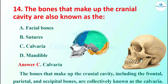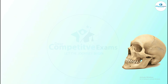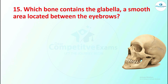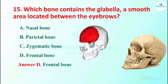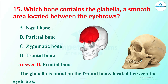Question 15: which bone contains the glabella, a smooth area located between the eyebrows? Options are nasal bone, parietal bone, zygomatic bone, or frontal bone. The answer is frontal bone. The glabella is found in the frontal bone, located between the eyebrows.